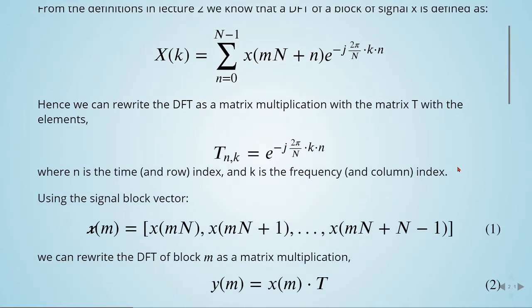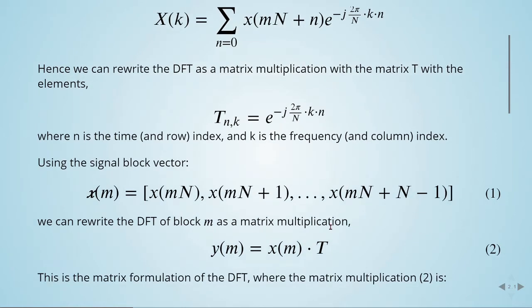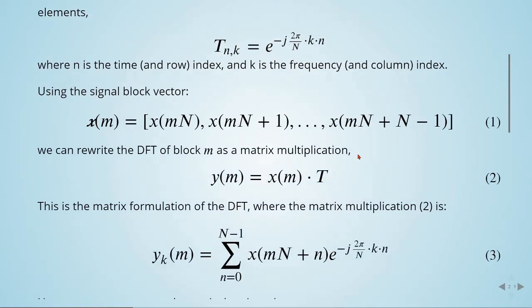Using the signal block vector given here, we can rewrite the DFT of block m as a matrix multiplication: y(m) = x(m)·T, where T is a matrix with these elements. This is the matrix formulation of the DFT.